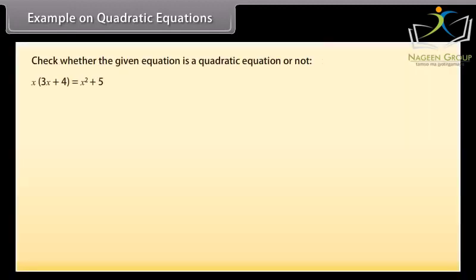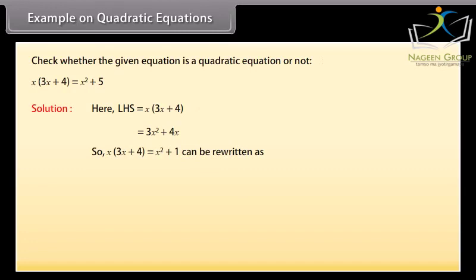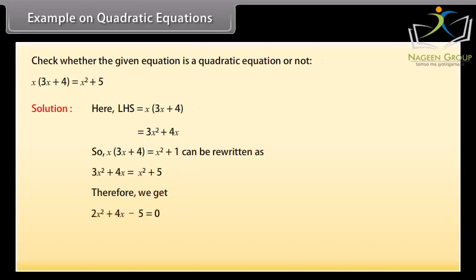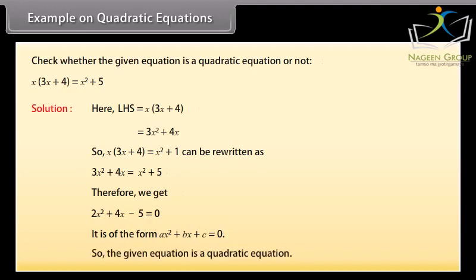Example on quadratic equations. We will now check whether the given equation is a quadratic equation or not. Here, LHS = x(3x + 4) = 3x² + 4x. So x(3x + 4) = x² + 1 can be written as 3x² + 4x = x² + 5. Therefore we get 2x² + 4x − 5 = 0. It is of the form ax² + bx + c = 0, so the given equation is a quadratic equation.